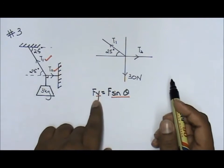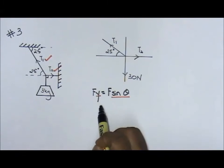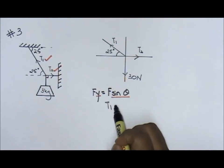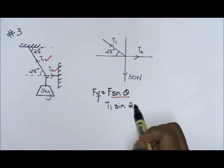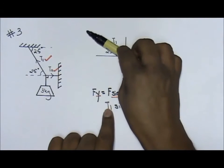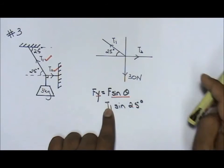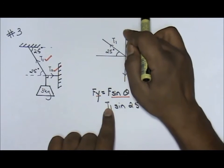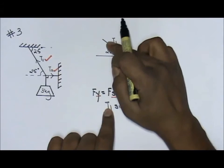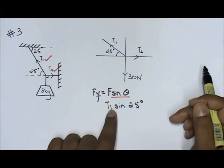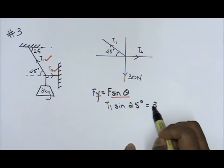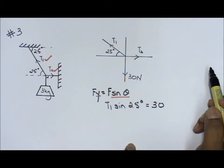Now, to bring it to Fy, it will be T1 sine 25 degrees. T1 sine 25 degrees. Now, remember what I told you? Up equals down. So, that means T1 sine 25 up equals to down. So, down is how many? 30 newtons. So, this equals to 30 newtons.